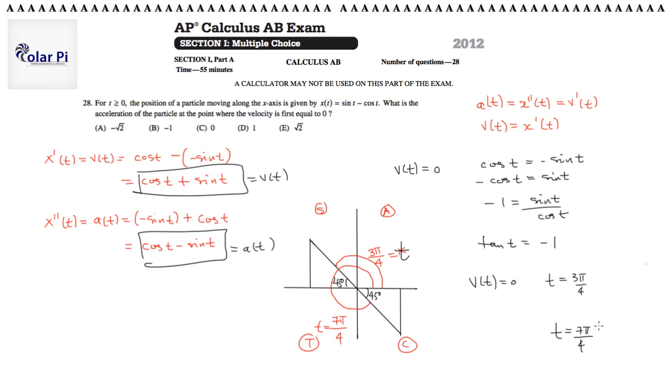But all along, we didn't care about 7 pi over 4, because it said to find the acceleration when the velocity is first equal to 0. So we just need to evaluate a of t for t equals 3 pi over 4, which is where the velocity is first equal to 0. So a of t, we already know, is this fella. So plugging in 3 pi over 4 into it, we get cosine of 3 pi over 4 and then minus sine of 3 pi over 4.